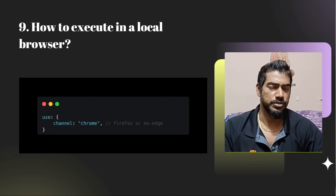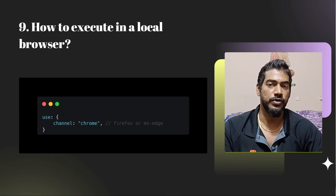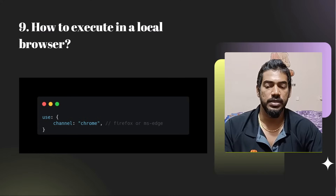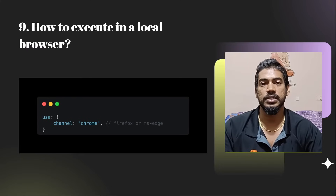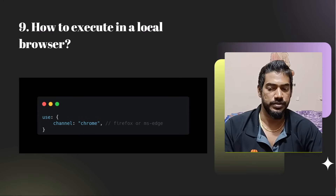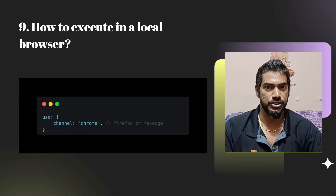How to execute in a local browser? Playwright by default runs in its own bundled Chromium, WebKit, or Firefox — not the regular browser you use. For example, if you're using Chrome version 100, Playwright will use the pre-release version 101. If you want to use your local browser version, use the 'channel' option where you can specify chrome, firefox, or Microsoft Edge.